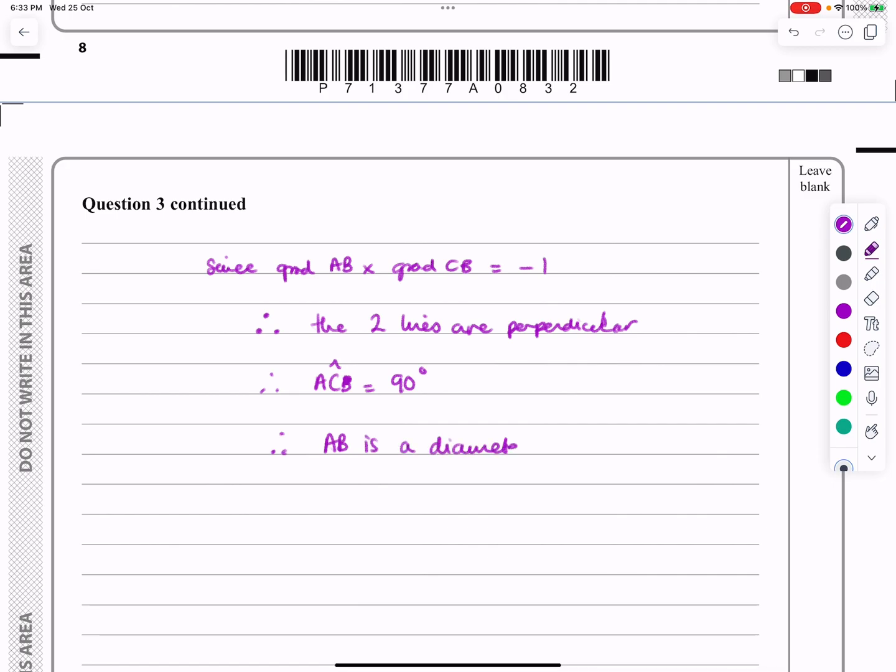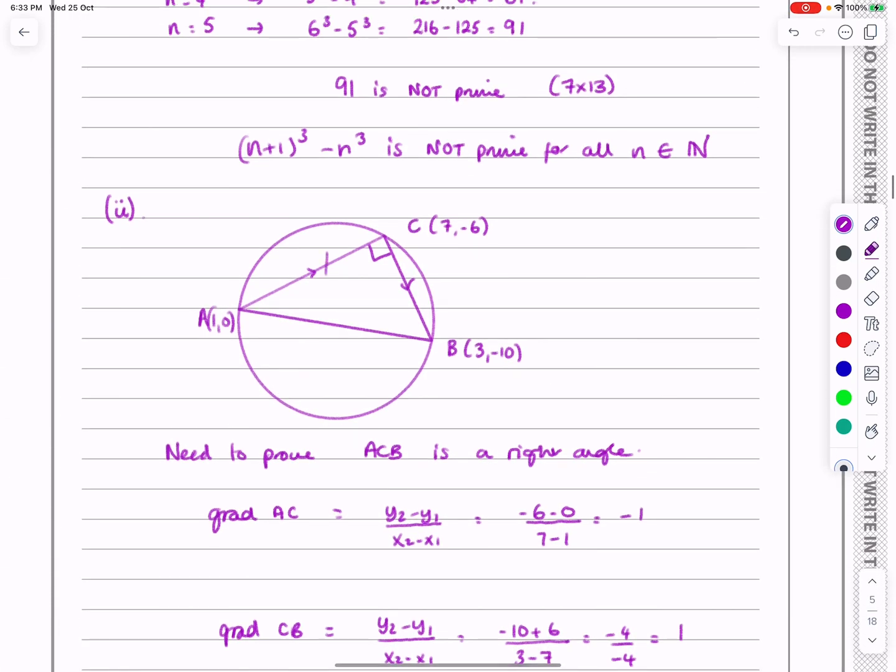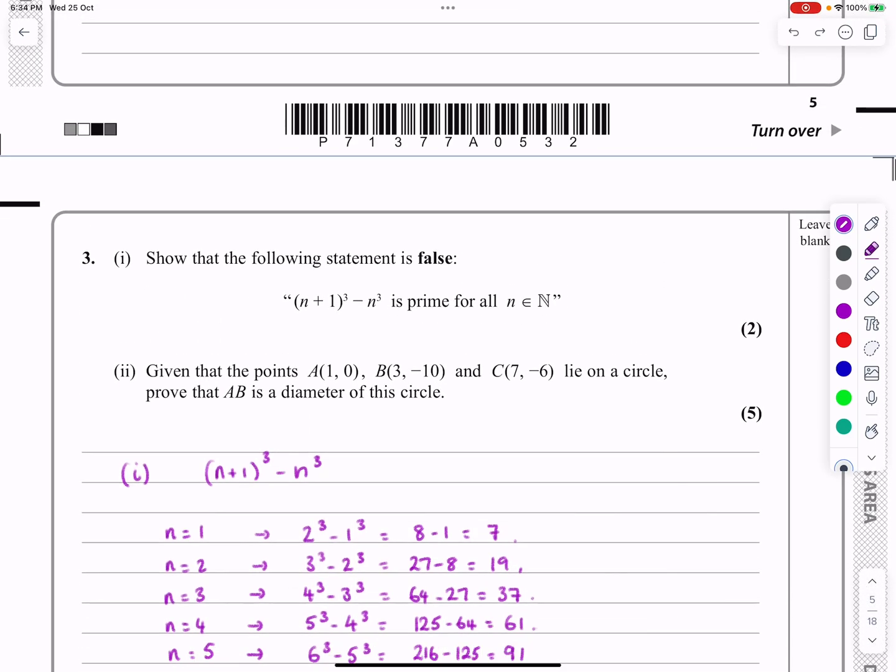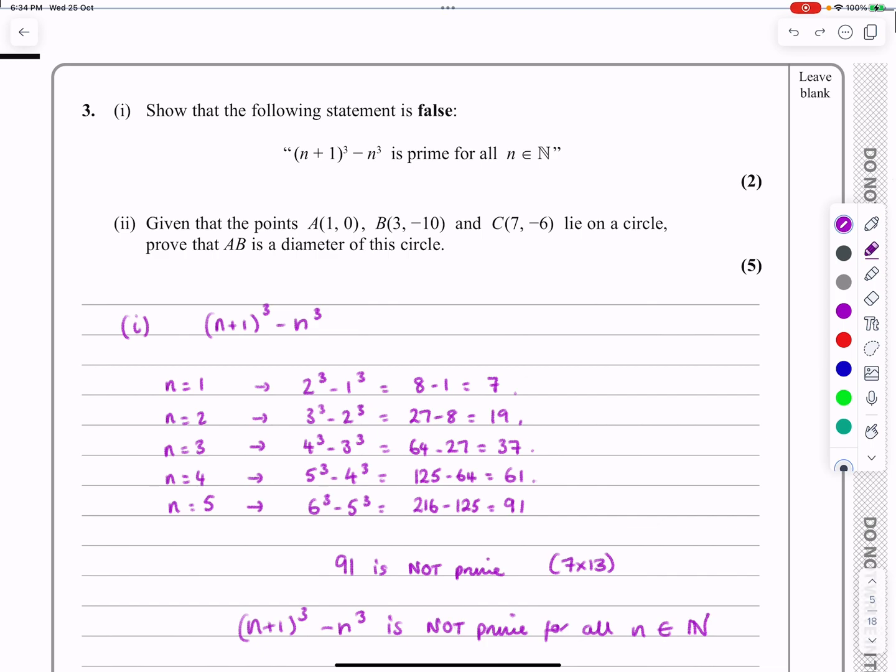Now, there are other ways that you could have shown it was 90 degrees. You could have worked out the length of this one, the length of this one, the length of this one, and shown that it all fitted in with Pythagoras. But, you know, I've just chosen one method to stick to when we're actually doing that one. So, proof question. Two different styles of proof. Hopefully that makes sense. Please look up. Take care.